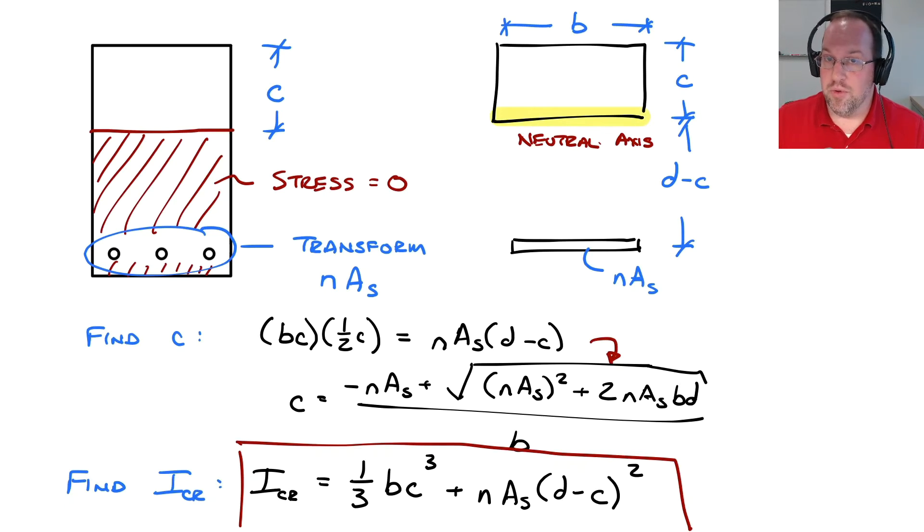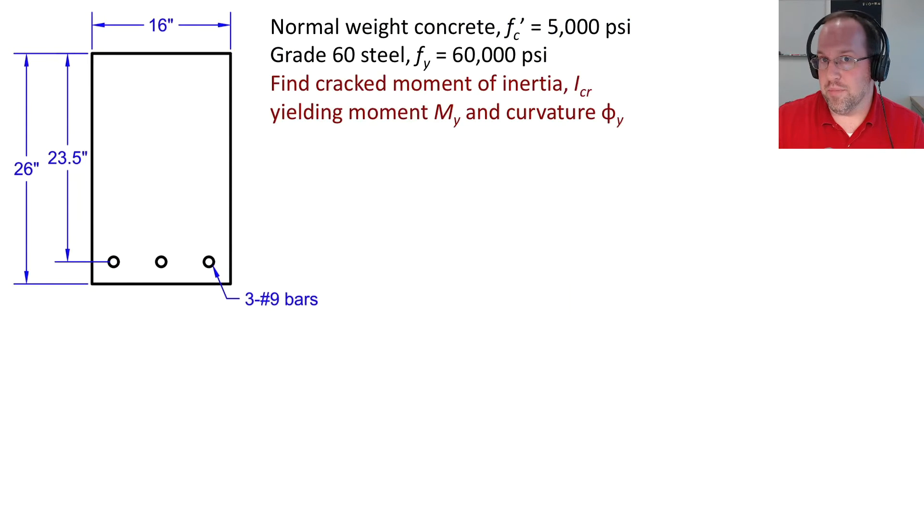So let's take that result, and we'll consider an example problem where we'll calculate this cracked moment of inertia, the yielding moment, and the curvature at yield. So here is our section, and if you've seen the previous video on the cracking moment, this is the same section. Here I have a normal weight concrete section of strength 5,000 PSI, grade 60 steel. It's a 16 inch by 26 inch section, and the steel is 23.5 inches down from the top. I have three number 9 bars, which ends up being an area of steel of 3.0 inches squared.